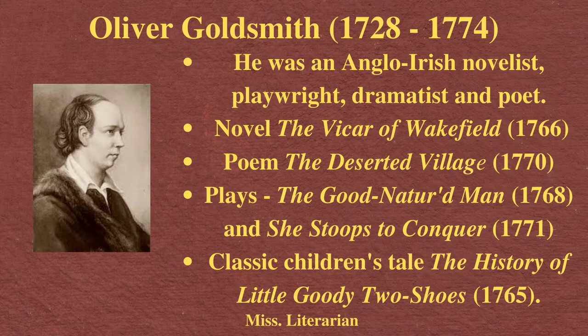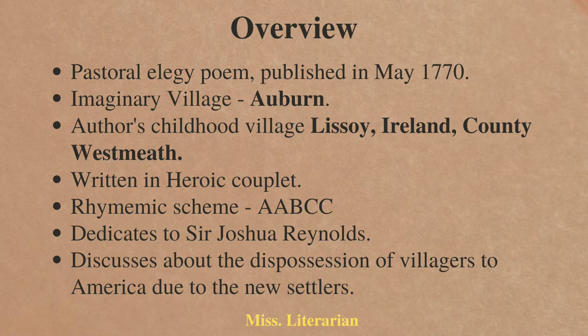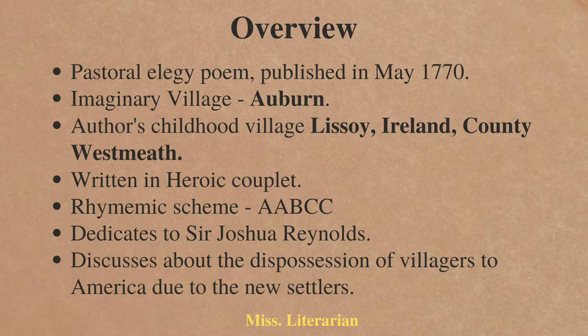Now let's see the poem The Deserted Village. This is a pastoral poem published in the year 1770. The meaning of this poem is given in the title — The Deserted Village. The meaning of deserted is being empty; this poem talks about an empty village. Oliver Goldsmith creates an imaginary village named Auburn, which is the name that appears in this poem.